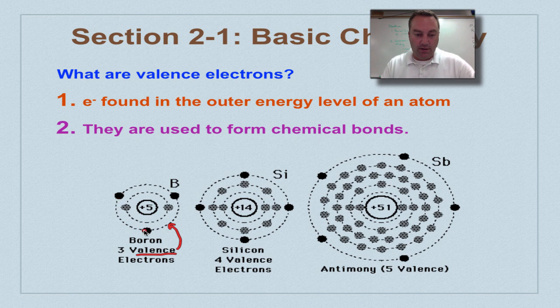You'll notice here one, two, three. Silicon, very similar to carbon, it has one, two, three, four on its outer valence level. And then antimony, which has 51 electrons, the only ones that really matter are the one, two, three, four, five out here, because those are going to be used to make chemical bonds.